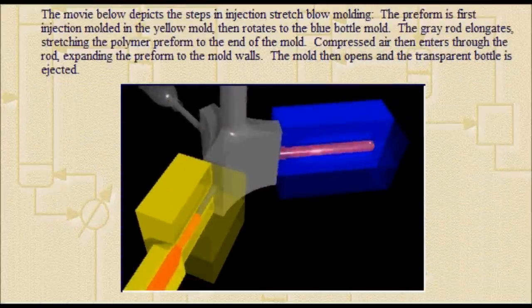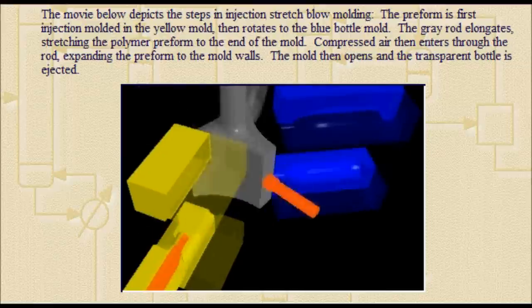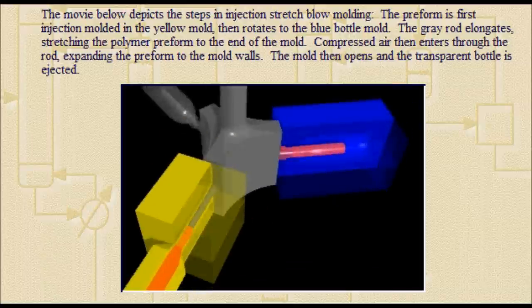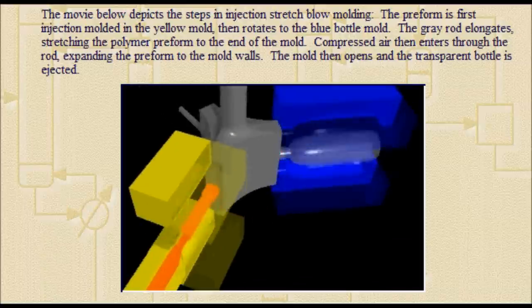This movie depicts the steps in injection stretch blow molding. The preform is first injection molded in the yellow mold, then rotates to the blue bottle mold.